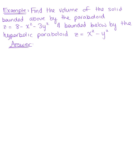Find the volume of the solid bounded above by the paraboloid Z = 8 - x² - 3y², and bounded below by the hyperbolic paraboloid Z = x² - y².